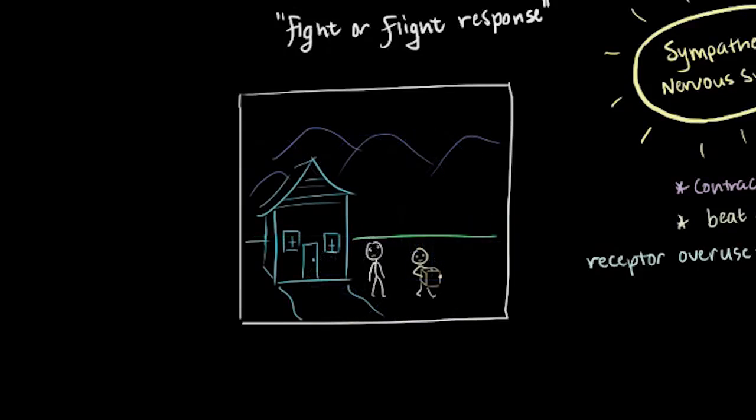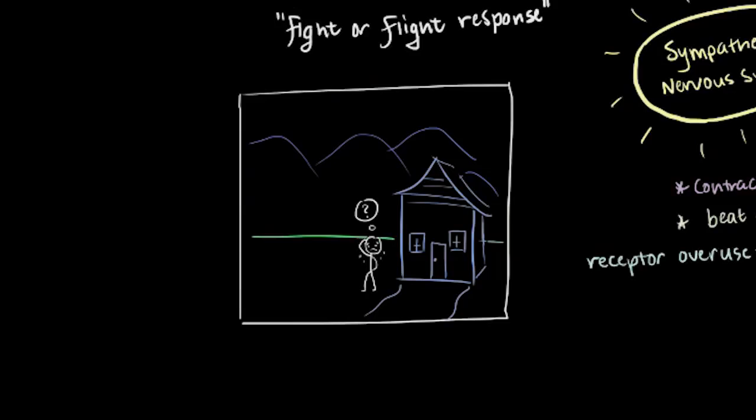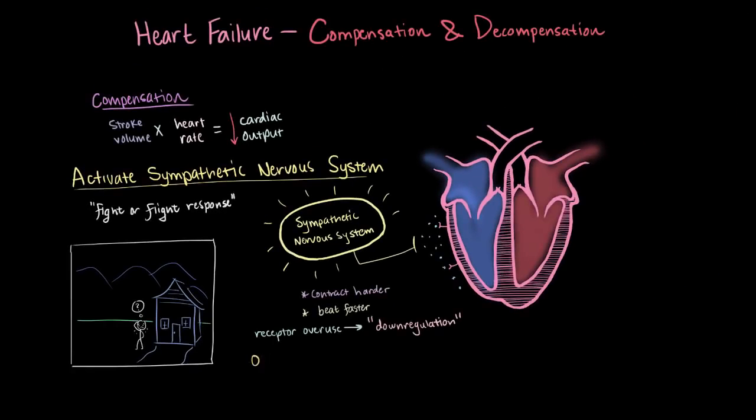And then you keep doing this week after week. And those friends are going to start to, well, one, question why you're moving so much. And two, they're going to stop maybe answering your phone calls. It's sort of the same thing with your sympathetic nervous system. When you activate it too much, it's going to start helping less and less.